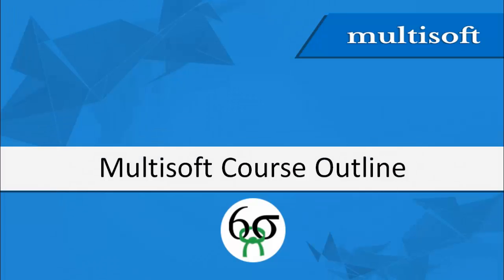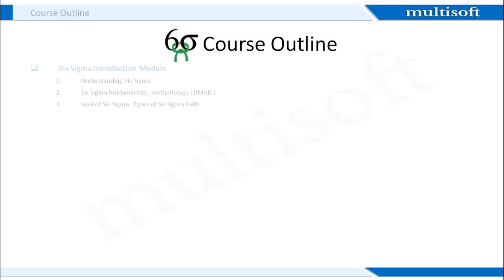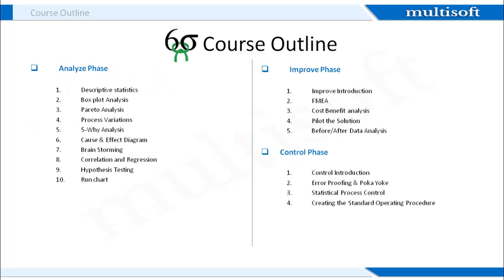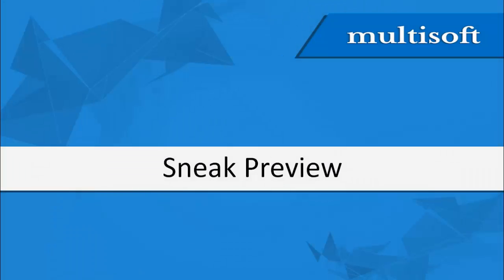Let's get on to the course outline. The course is divided into six broad modules, with the first three being Introduction, Define phase, and the Measure phase. The remaining three modules are Analyze phase, Improve phase, and the Control phase. These modules are further subdivided into sections which can be seen in the slide. During the course duration, we will also relate the various Six Sigma concepts with lean methodologies that will help you develop a broader outlook towards how various process improvement practices can be differently applied in various scenarios.